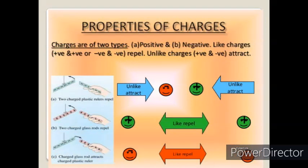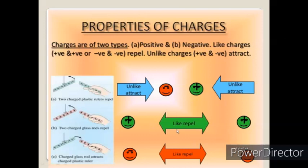Next are the properties of charges. The two types of charges are positive and negative. The fundamental positive charge is the proton and the fundamental negative charge is the electron. Unlike charges attract each other and like charges repel each other. For example, two charged plastic rollers repel each other, two charged glass rods repel each other, and a charged glass rod attracts a charged plastic ruler.